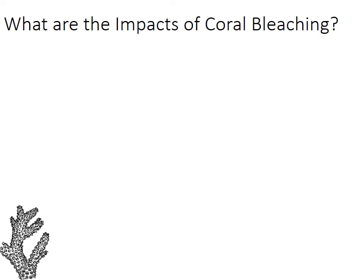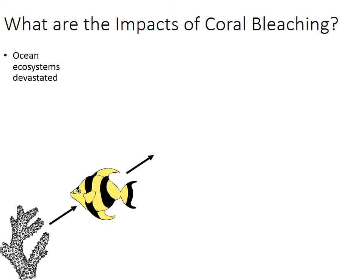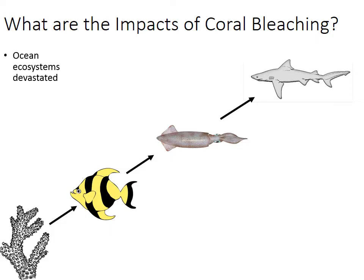What are some of the impacts of coral bleaching? Ocean ecosystems are becoming devastated as a result. Consider a simple food chain: coral is consumed by fish, fish by squid, squid by shark. If coral were suddenly removed from this ecosystem, the photosynthetic producers at the bottom of the food chain would be gone, and slowly but surely, as we move up the food chain, other organisms would start to diminish, if not be wiped out completely.